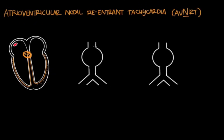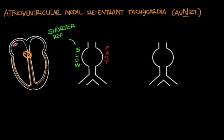In AVNRT, there are two pathways that run through the AV node: a slow pathway, where an impulse travels more slowly, and a fast pathway, where the impulse can zip through quickly. Due to their inherent makeup, the slow pathway has a shorter refractory period, while the fast pathway has a longer refractory period. So: slow pathway = short refractory period; fast pathway = long refractory period.